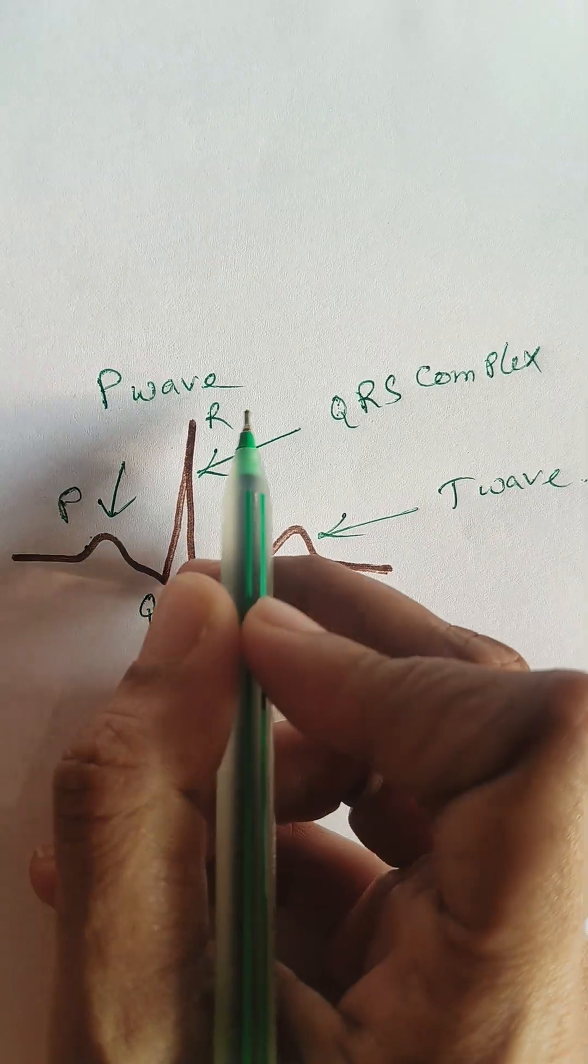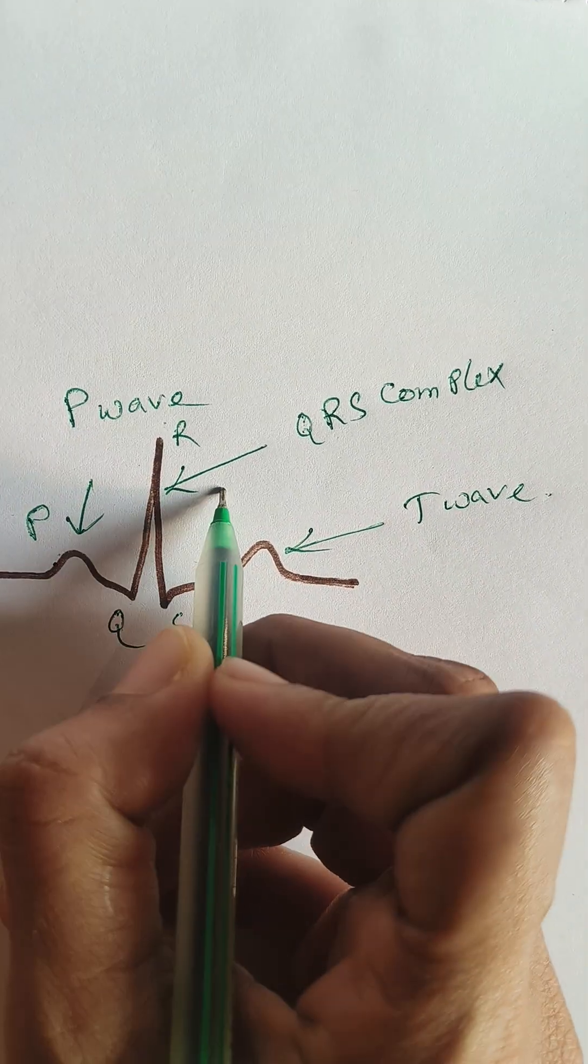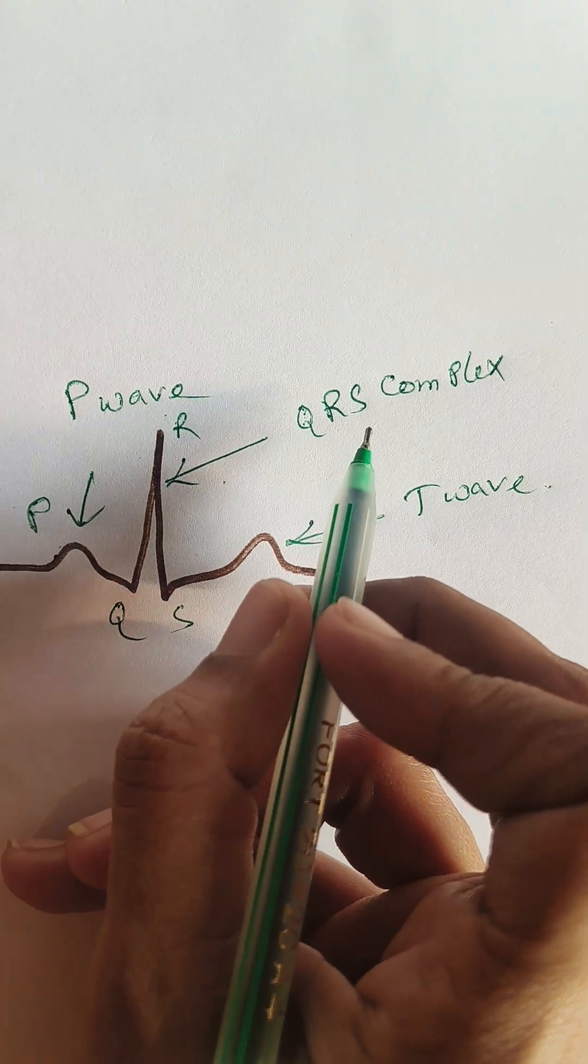Next is QRS complex. So it is generated due to the ventricular contraction.